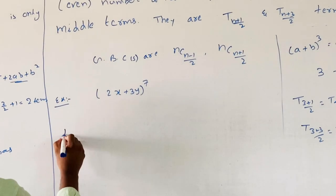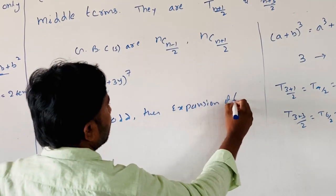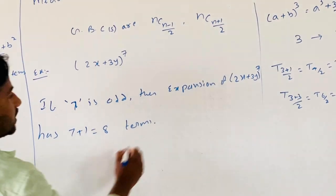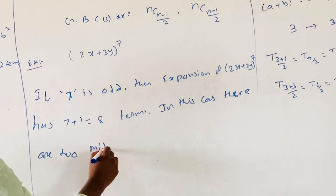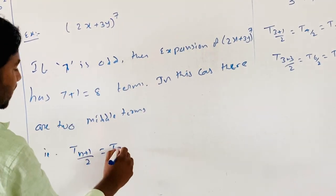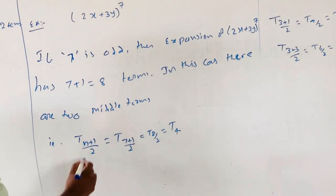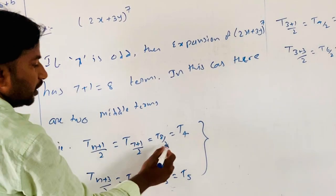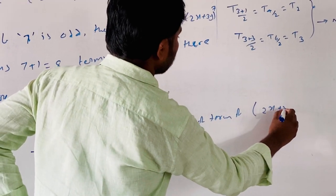For (2x + 3y)^7, since 7 is odd, the expansion has 7 + 1 = 8 terms. In this case, there are two middle terms: T(n+1)/2 = T(7+1)/2 = T(8/2) = T4, and T(n+3)/2 = T(7+3)/2 = T(10/2) = T5. So T4 and T5 are the middle terms of the expansion of (2x + 3y)^7.